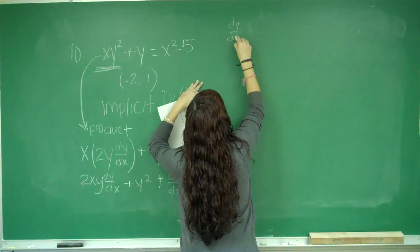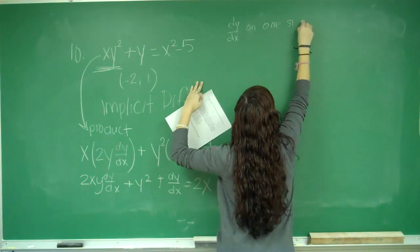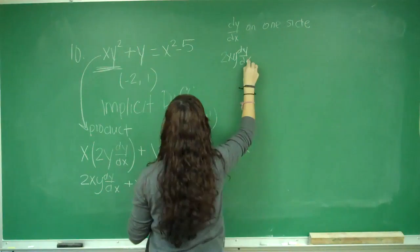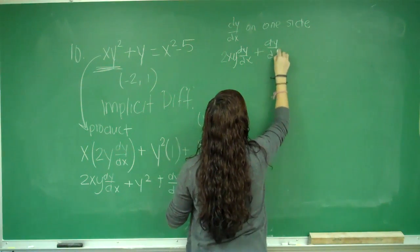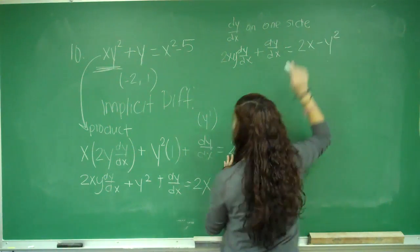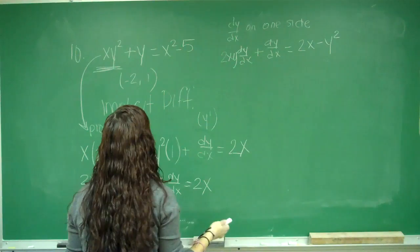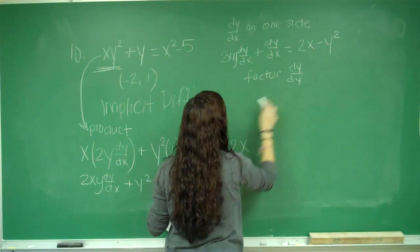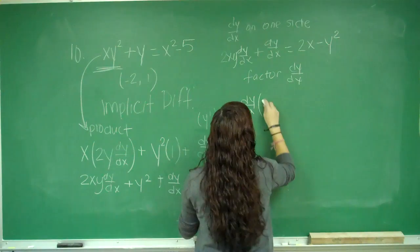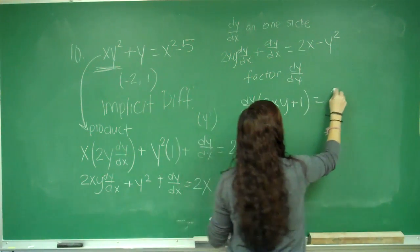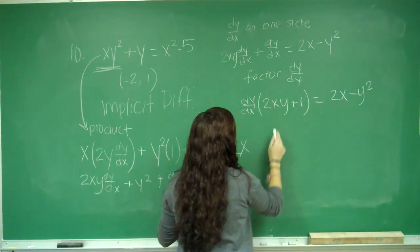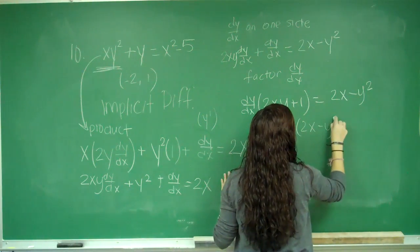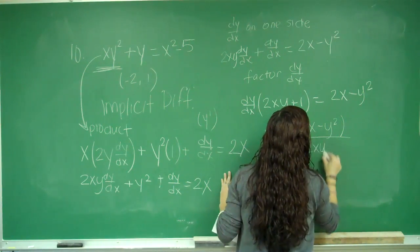So I would have 2xy dy/dx plus dy/dx equals 2x minus y². So then I'm going to factor out dy/dx. So I have dy/dx times (2xy + 1) equals 2x minus y². Now I'm going to divide. So I have dy/dx equals (2x - y²)/(2xy + 1).